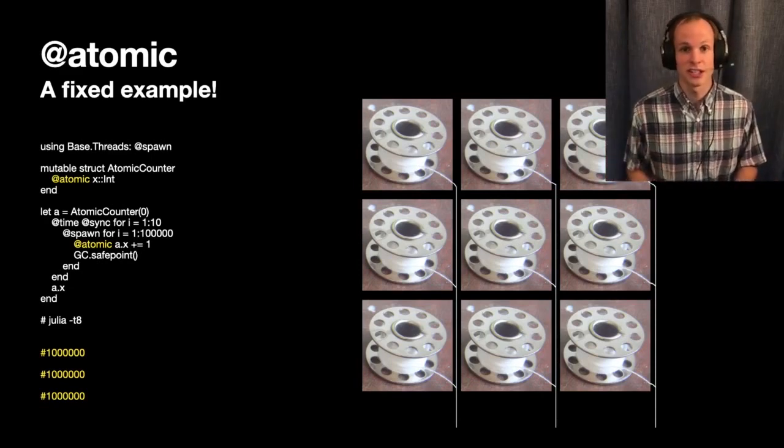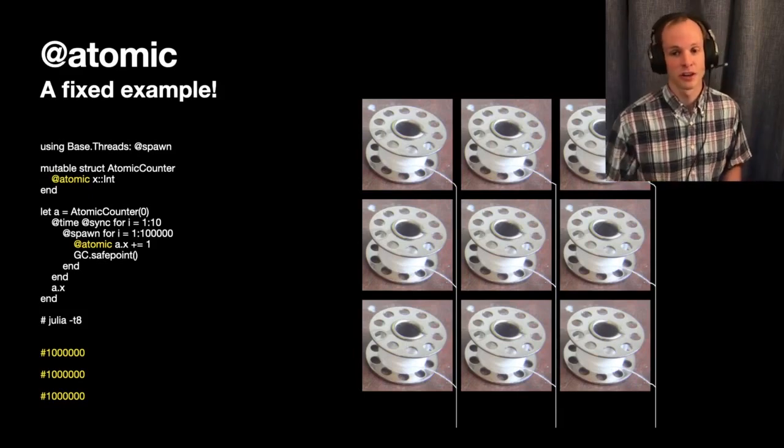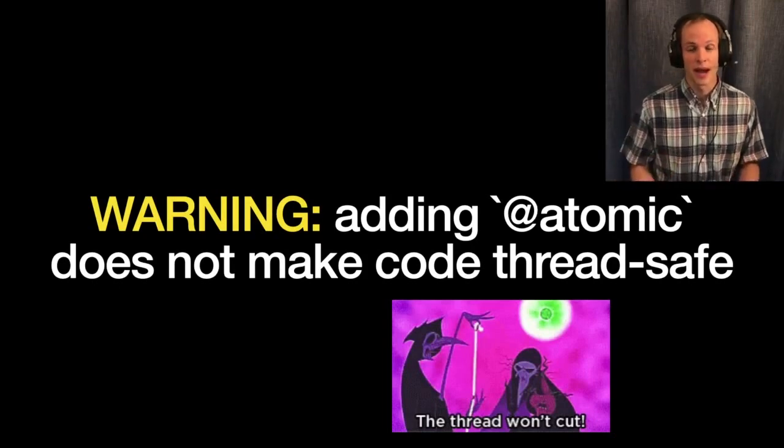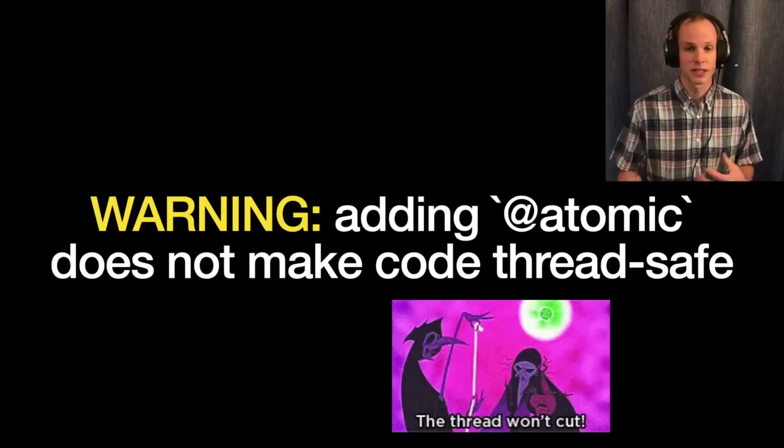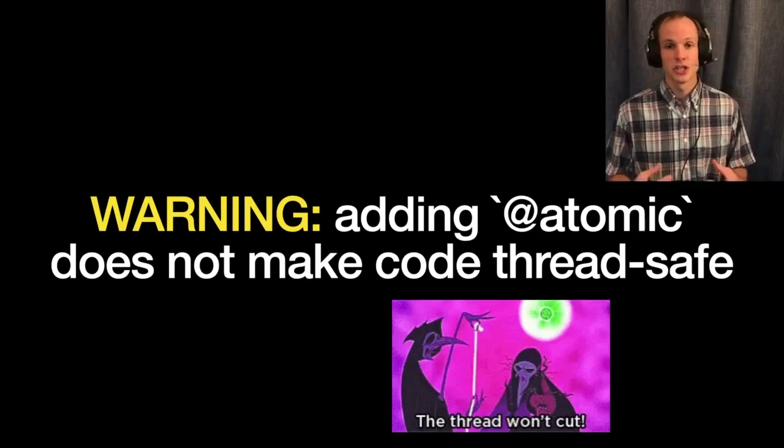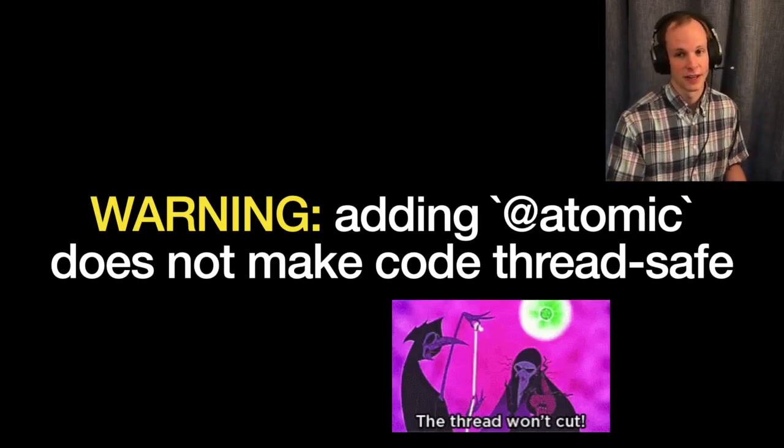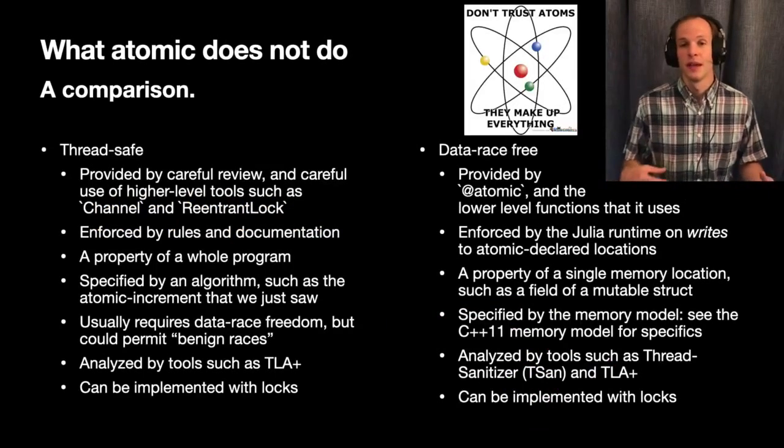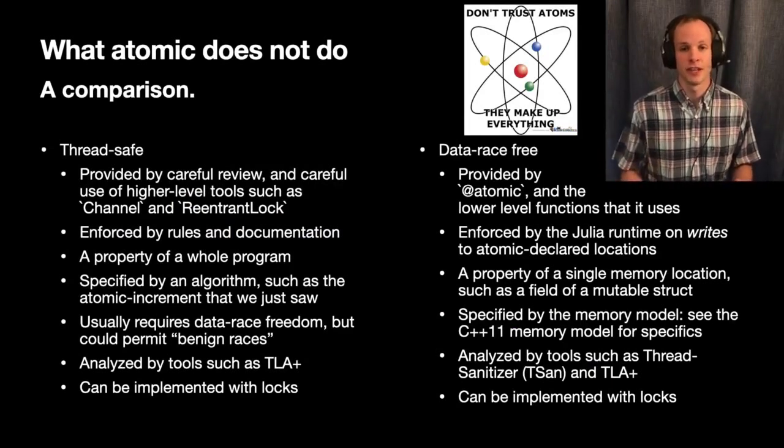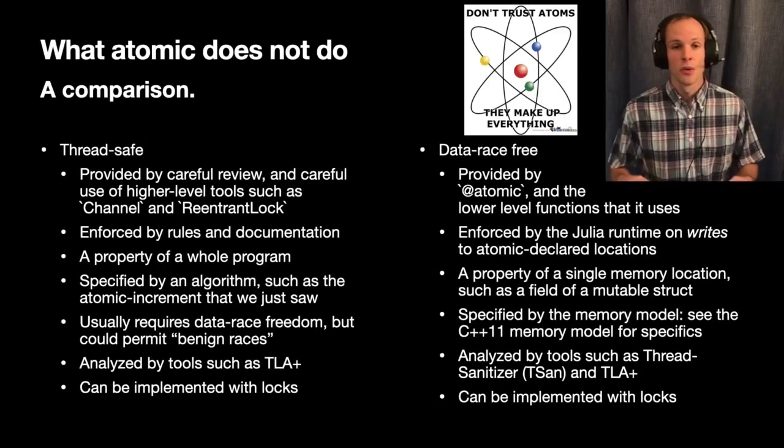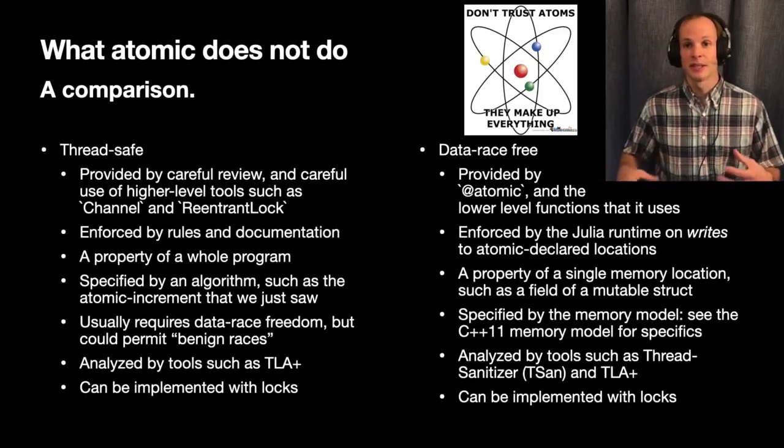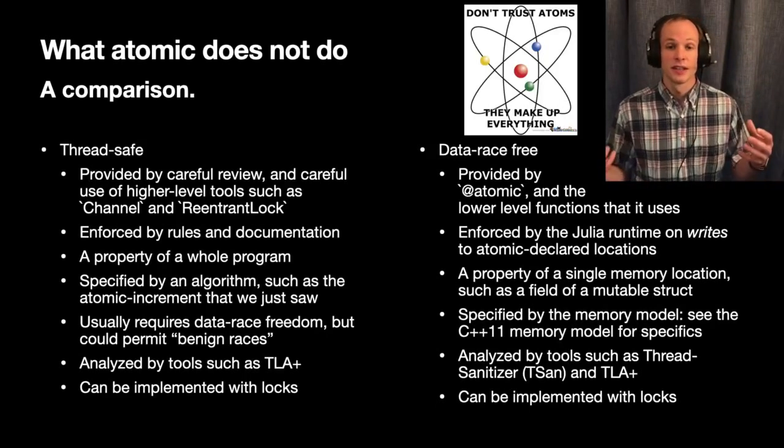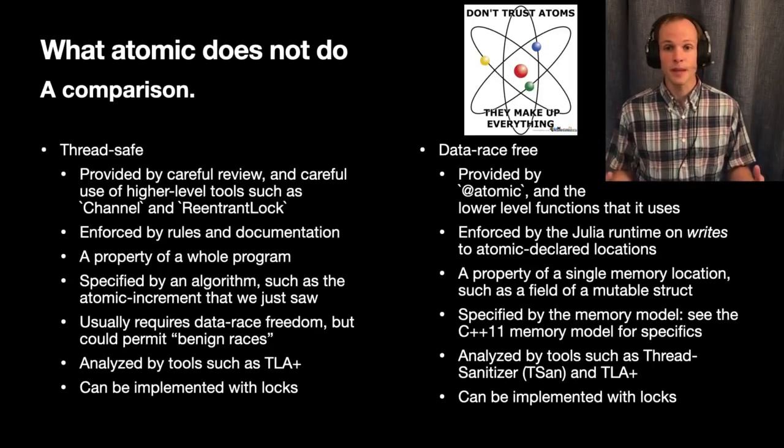But an important thing to realize and know about is that just adding @atomic to the places where our code has races is not going to be enough to give us thread safety. Now why is that? What does atomic do and what doesn't it do? @atomic gives us what we call data race freedom. This is a very particular concept which can be a building block to make things thread safe, but it is not always necessary or even sufficient to do so.